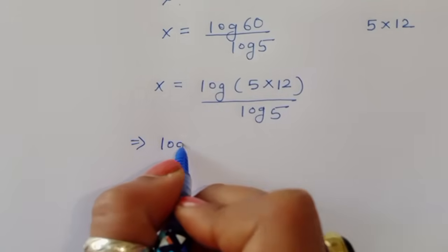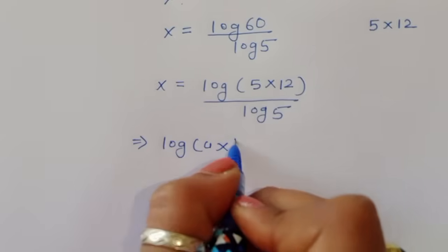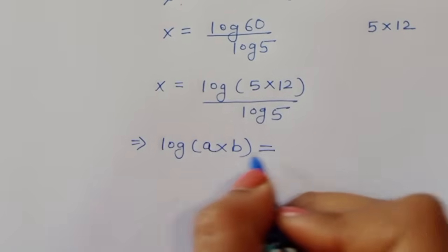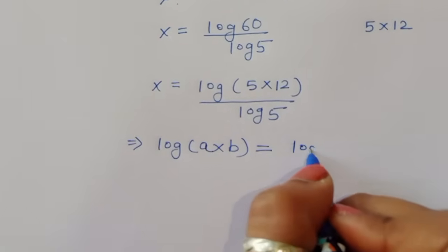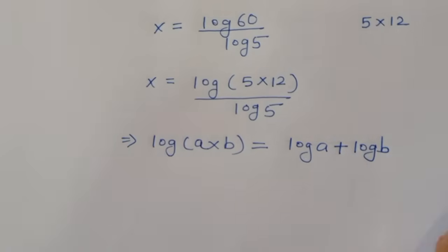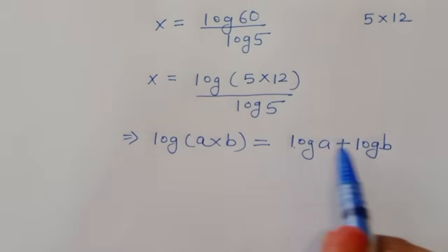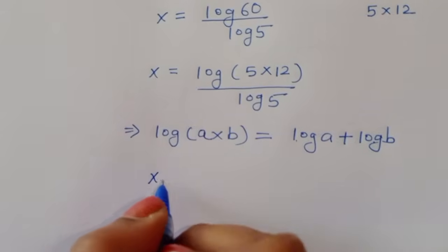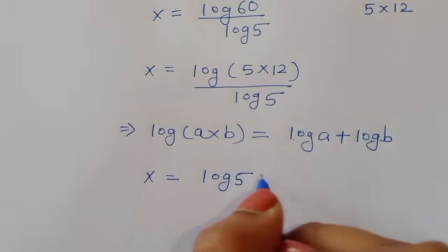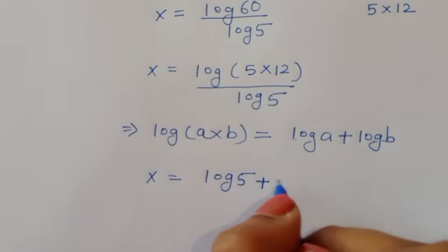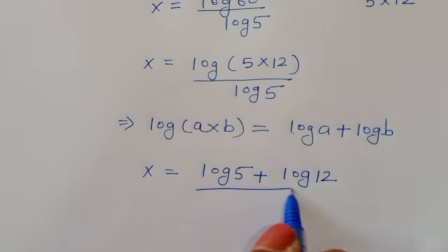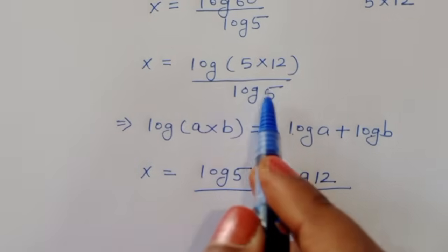Now we use the formula log of a times b equals log of a plus log of b. Applying this formula, we get x is equal to log of 5 plus log of 12, all divided by log of 5.